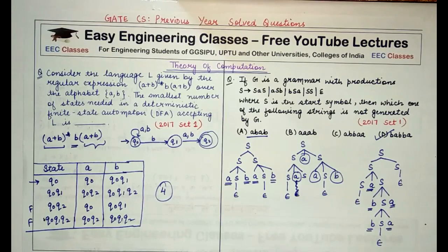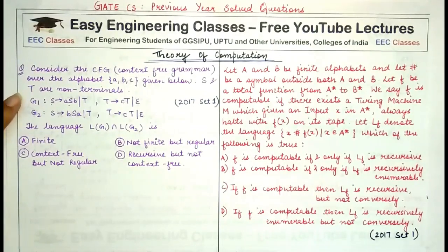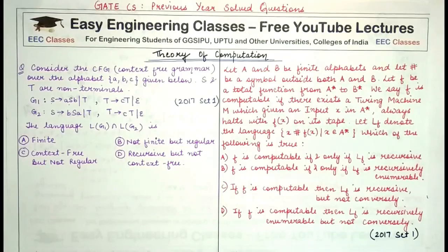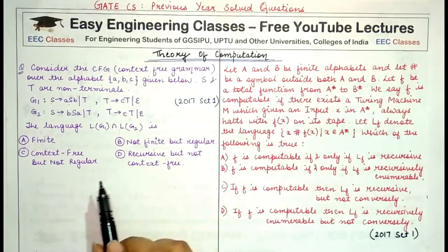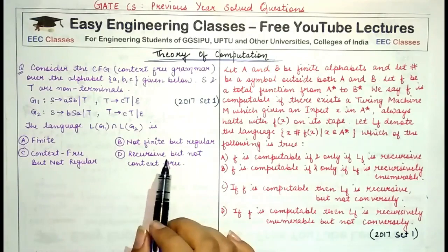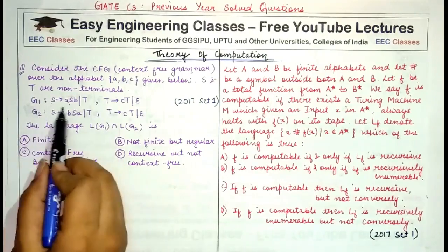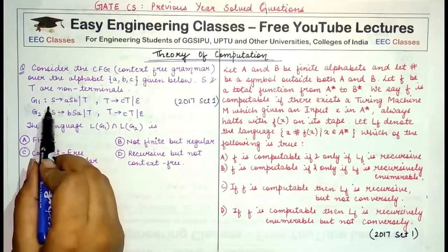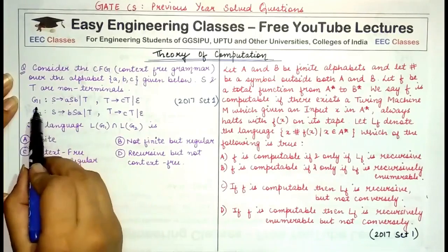The next question: consider the context-free grammar over the given alphabet where S and T are non-terminals, and we are given two context-free grammars G1 and G2. We need to find L(G1) ∩ L(G2) and determine whether the resulting language is context-free, regular, recursive, or finite. First, we find the language generated by G1, where S is the starting symbol.